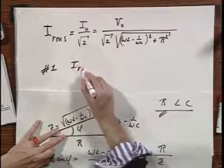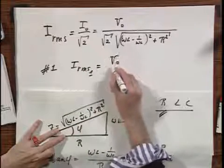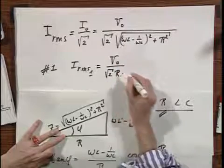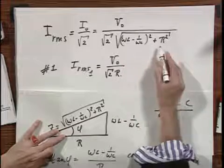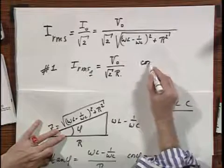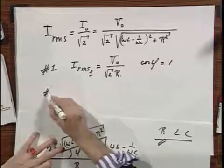So if now I go to station number 1, I get that I RMS for station number 1 equals simply V0 times the square root of 2 times R. Because when this is 0 at resonance, I only have an R here. Cosine phi equals 1.